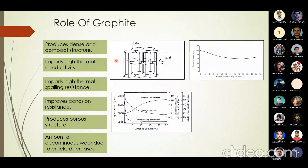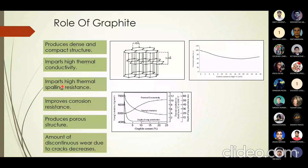Graphite is sp2-hybridized carbon. Carbon has four electrons but three are bonded, leaving one unpaired electron. These unpaired electrons result in high thermal conductivity, and consequently high thermal spalling resistance — thermal spalling and thermal shock resistance being the same concept. The requirements for high thermal shock resistance are high thermal conductivity and low thermal expansion, and graphite satisfies both.